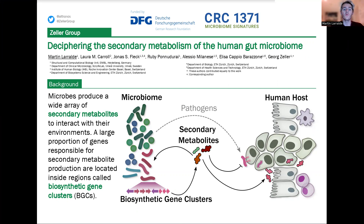Microbes produce a wide array of secondary metabolites to interact with their environments. A large proportion of genes responsible for secondary metabolite production are located inside regions called biosynthetic gene clusters, or BGC for short. These secondary metabolites may directly impact the microbiome, but also have a regulatory effect on the human host, either by preventing the development of pathogenic bacteria or through direct intervention into human host health mechanisms like carcinogenesis.